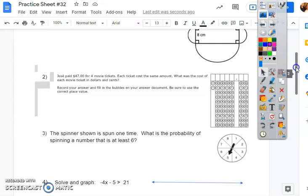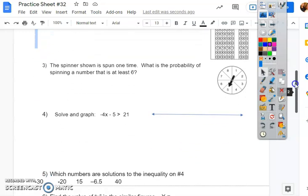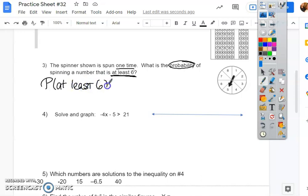Now let's do number three. The spinner shown is spun one time. What is the probability of spinning a number that is at least six? So probability of at least six. Now this wording confuses people, which is why I want to make sure we talk about it together. At least means this number or higher.